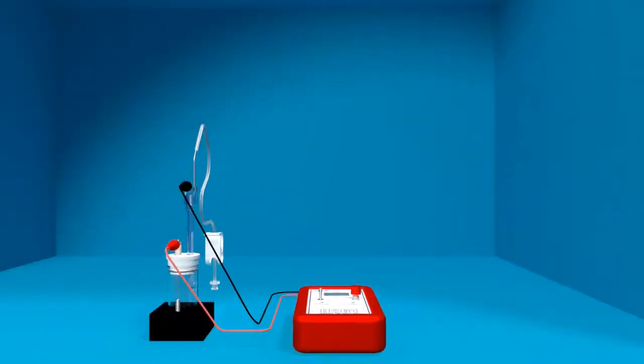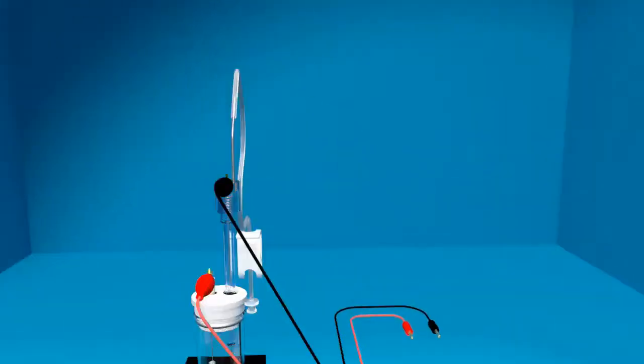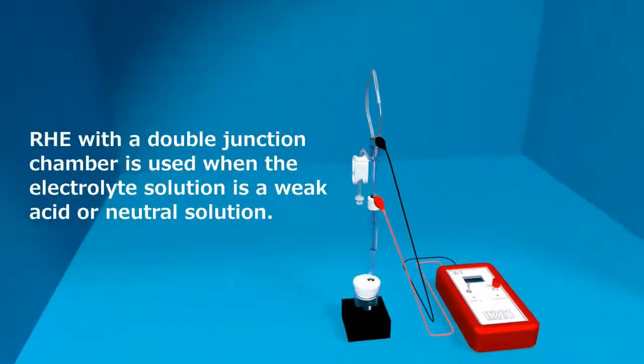This prepared reversible hydrogen electrode has high accuracy, stability and can be the perfect alternative for the traditional standard hydrogen electrode. When using the reversible hydrogen electrode with a double junction chamber, it makes possible to apply in a weak or neutral electrolyte solution.